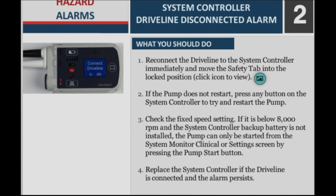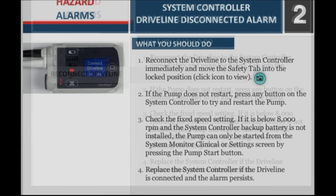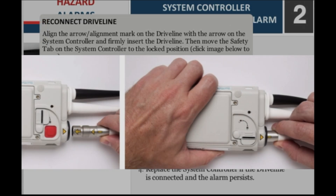Step 2: If the pump does not restart, press any button on the system controller to try and restart the pump. Step 3: Check the fixed speed setting. If it is below 8000 RPM and the system controller backup battery is not installed, the pump can only be started from the system monitor clinical or settings screen by pressing the pump start button. Step 4: Replace the system controller if the driveline is connected and the alarm persists. To reconnect the driveline, align the arrow or alignment mark on the driveline with the arrow on the system controller and firmly insert the driveline. Then move the safety tab on the system controller to the locked position.